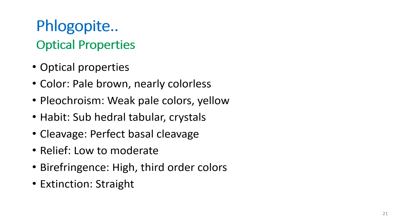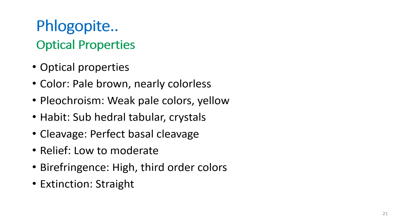Phlogopite optical properties: pale brown to nearly colorless in thin sections; shows pleochroism but weaker than biotite — weak pale yellow colors. Habit: subhedral tabular crystals; cleavage: perfect basal cleavage; relief: low to moderate; birefringence: high upper third-order colors; straight extinction. Occurrence: especially in metamorphic impure magnesium limestone, and more common in metamorphic than igneous ultramafic rocks. It is also a common constituent of kimberlites.